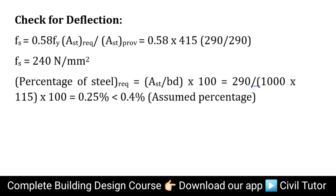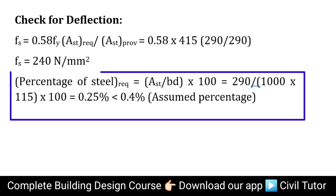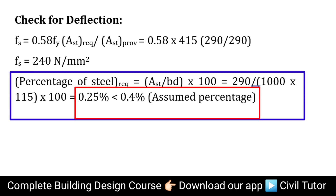We need to check if the effective depth of the slab satisfies the deflection criteria. Fs = 0.58 × Fy × (AST required / AST provided). Where Fy = 415 and the required and provided AST are both 290 mm². On substituting, Fs = 240 N/mm². The required percentage of steel = (AST / B×D) × 100 = (290 / (1000 × 115)) × 100 = 0.25%, which is less than the assumed percentage of 0.4%. Hence, satisfying the criteria. The deflection check can be considered satisfied.